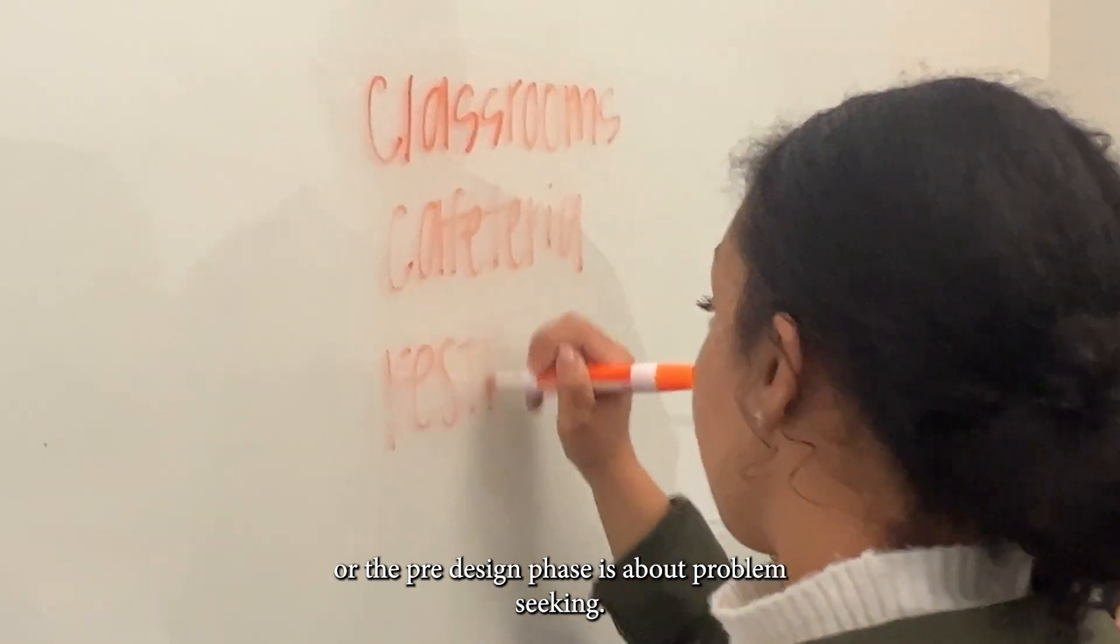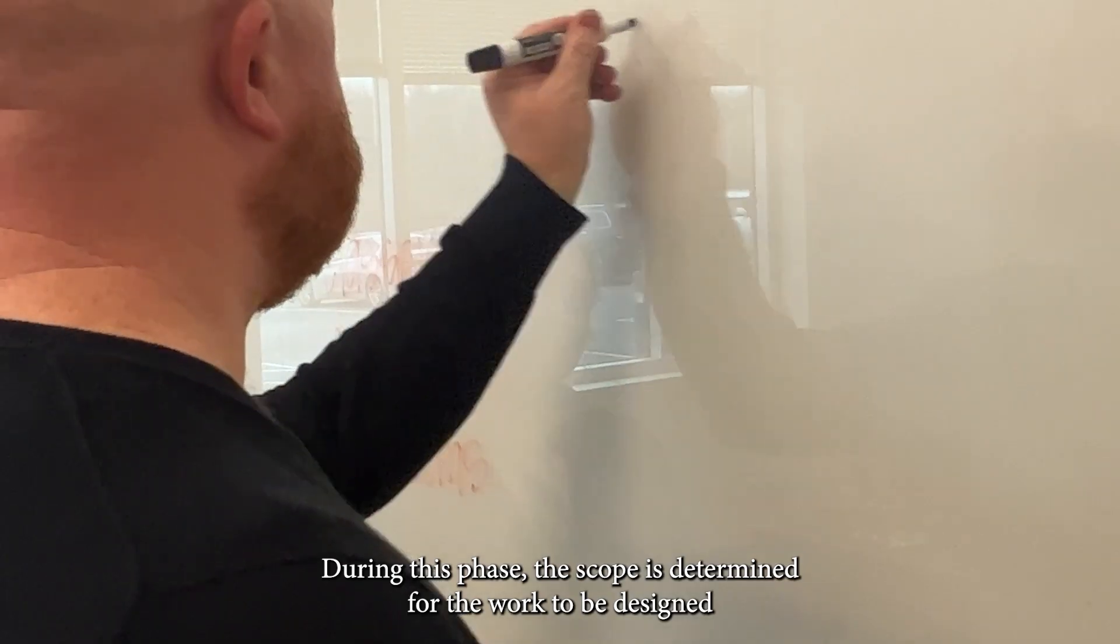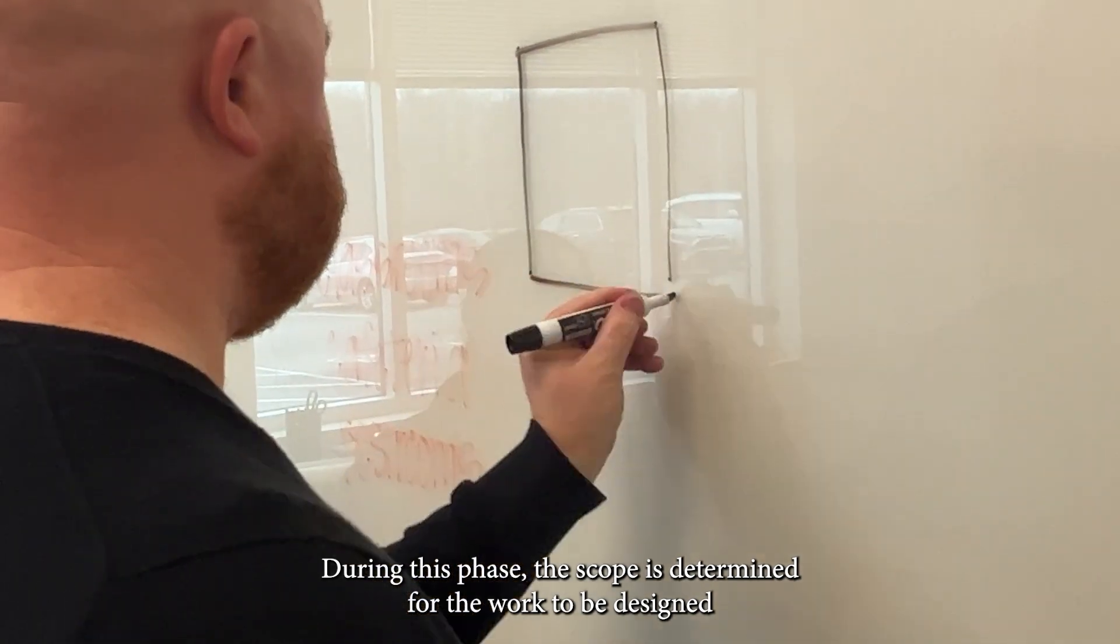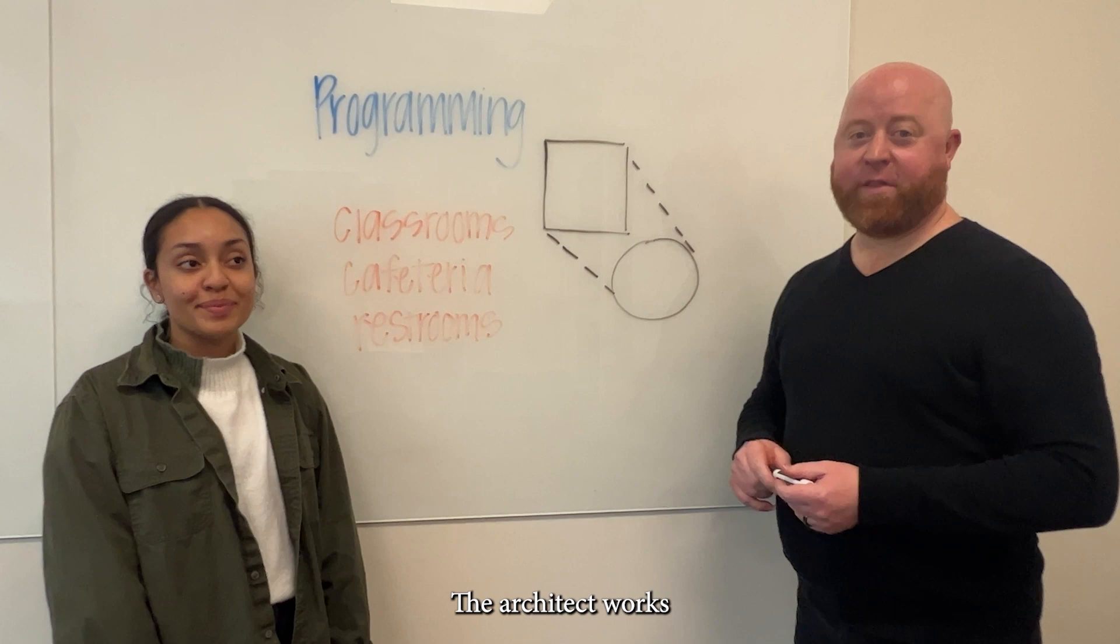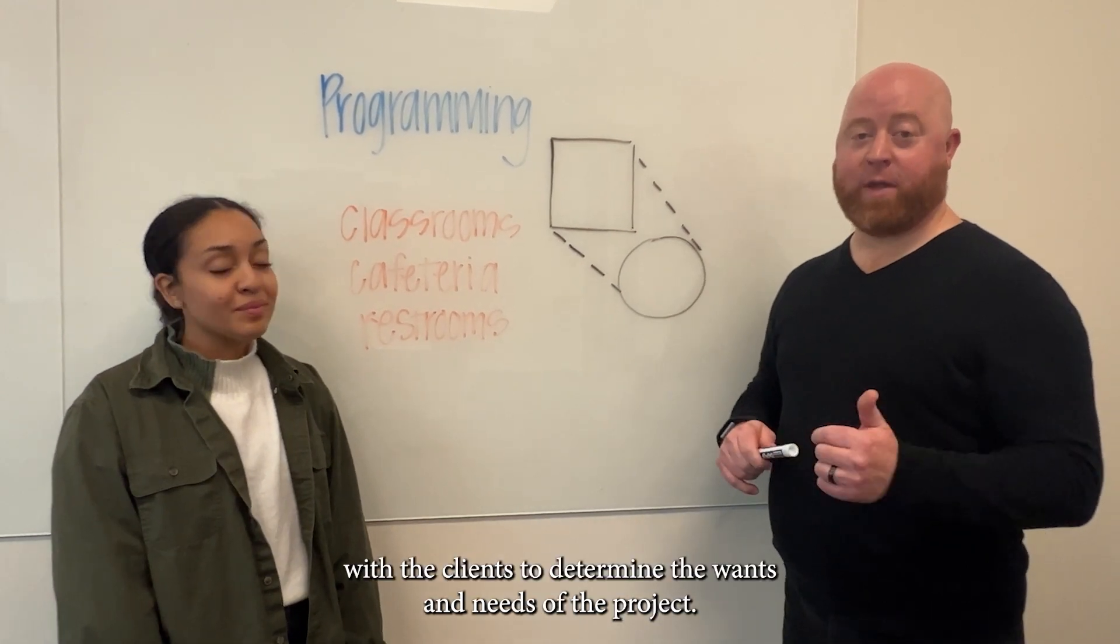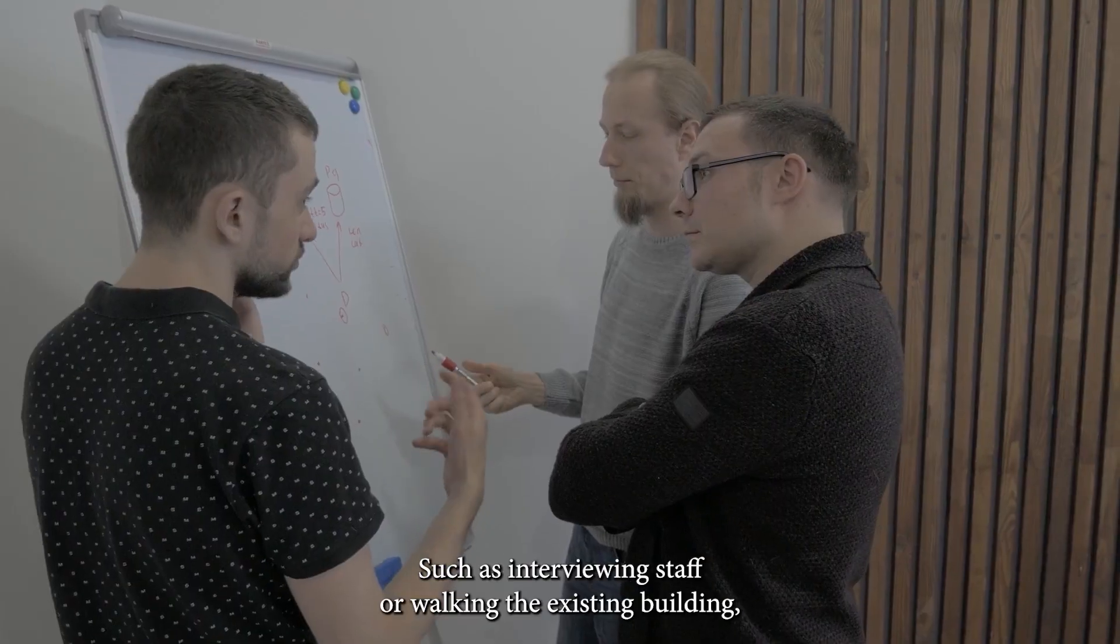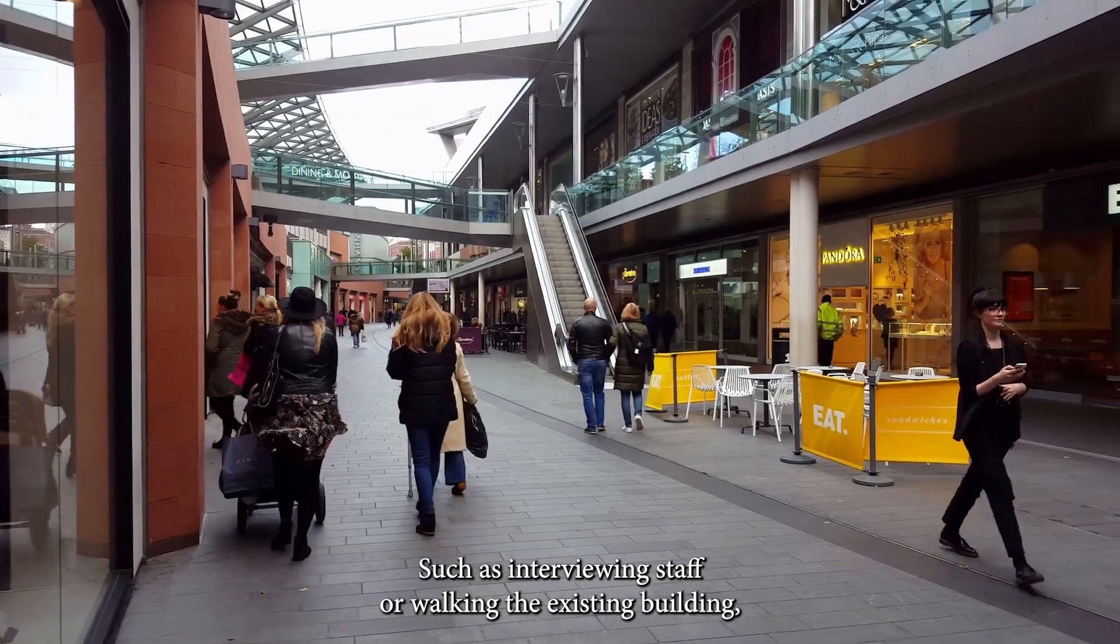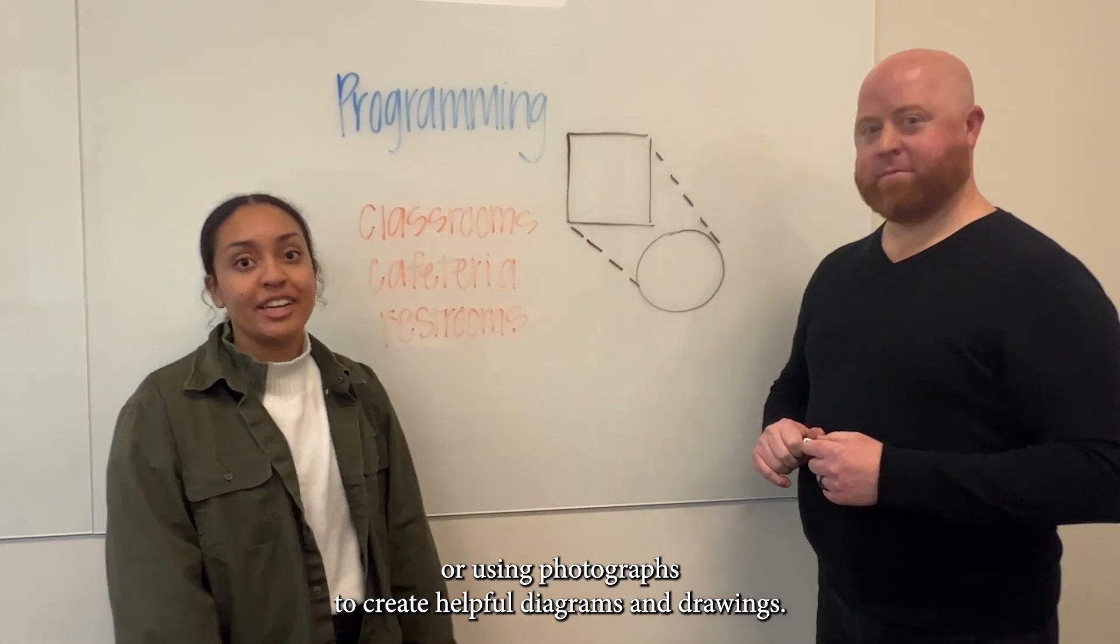The programming or the pre-design phase is about problem seeking. During this phase, the scope is determined for the work to be designed. At the beginning stages of the project, the architect works with the clients to determine the wants and needs of the project, such as interviewing staff, walking the existing building, or using programs to create helpful diagrams and drawings.